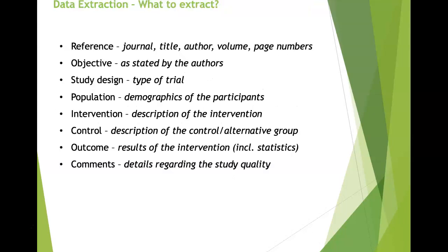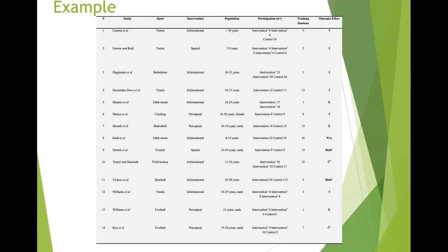What do you extract? The reference, the objectives, the study design, the population, the intervention they used, the control group, the outcome — the results — and any comments about the study. A good approach is to have an Excel spreadsheet which you can then put into a table in the systematic review.